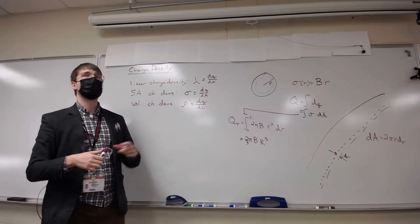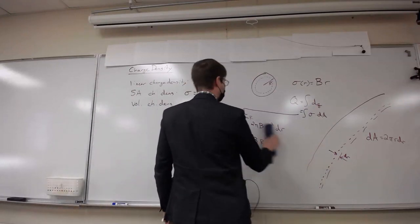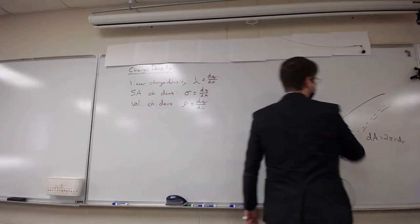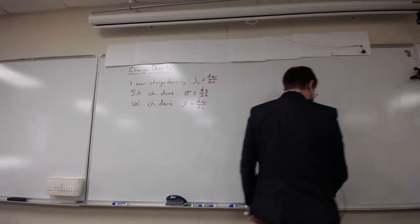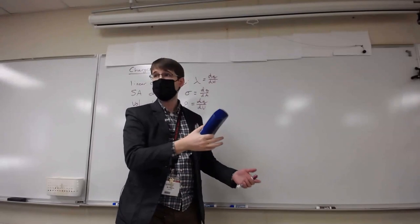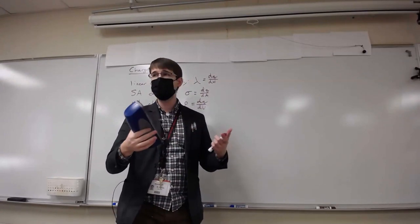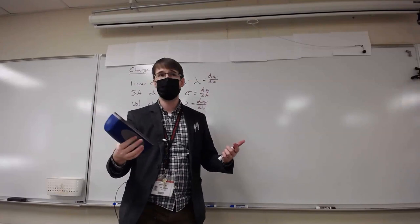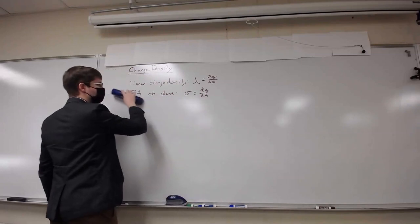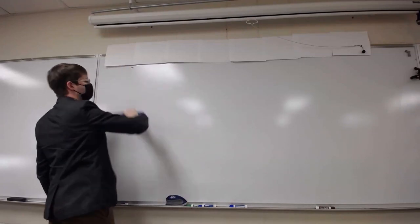So that's the basic idea: use charge density to find how much charge is on an object. Now we're going to combine this with the idea of electric field to calculate the electric field around objects that have distributed charges. I'll erase this and we'll get going with electric field calculations.